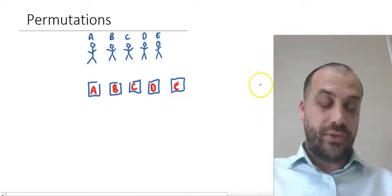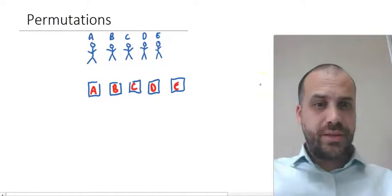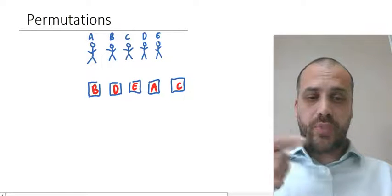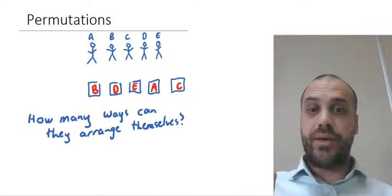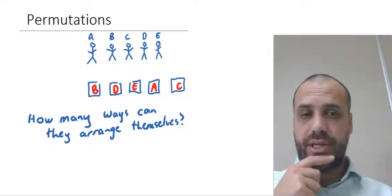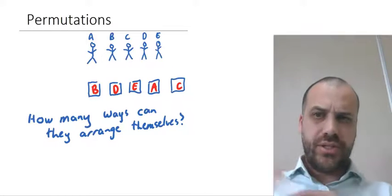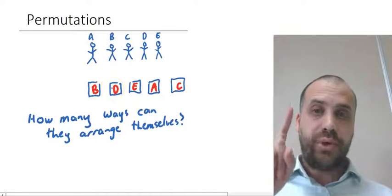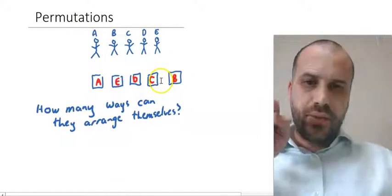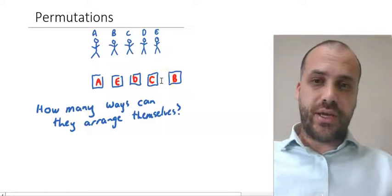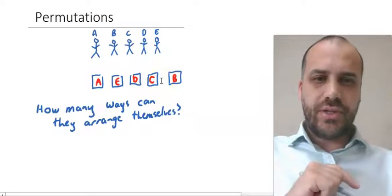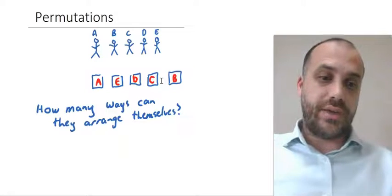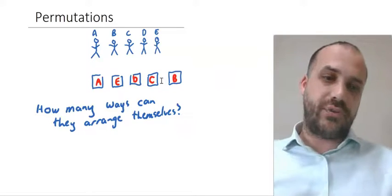They could sit alphabetically, or they could also sit randomly. Now, they could sit in many, many different ways, so the obvious question is, how many ways can they arrange themselves? This word permutations — what does it mean? Well, this is a particular permutation. That's one permutation of them sitting down. That's another permutation right there. So how many ways can they arrange themselves? Another way to say that is how many permutations are there?